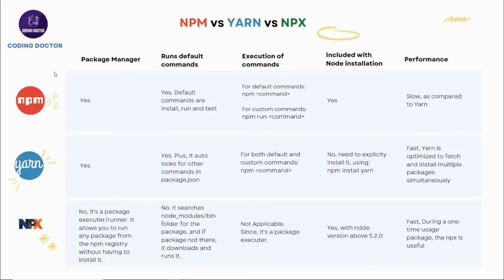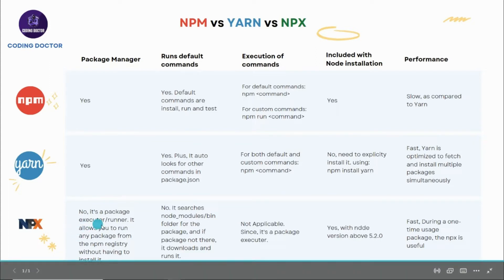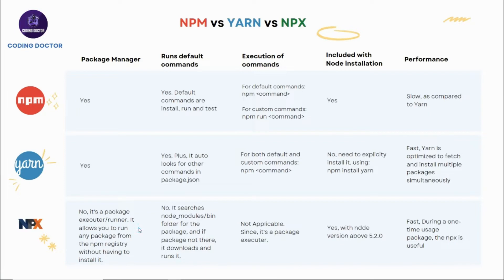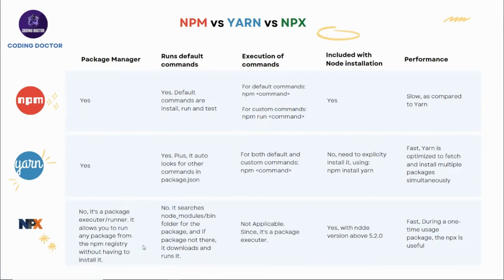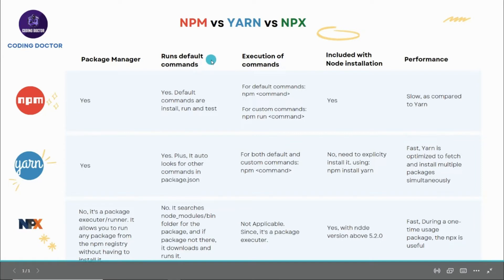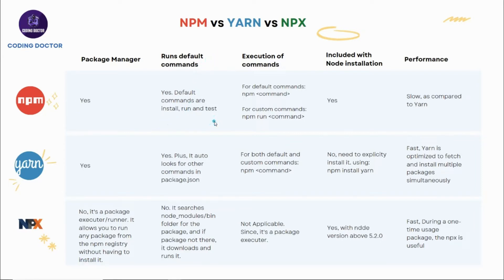I have prepared these notes — let's walk through them. The first key difference: npm is a package manager, yarn is also a package manager similar to npm, but the main difference between npm and yarn is how they handle the package installation process. Yarn can install packages in parallel. npx, on the other hand, is not a package manager — it's a package runner, which means it allows you to run any package from the npm registry without having to install it. If the package is not available, it will go ahead, download it, and then run it.